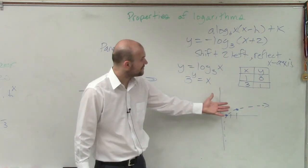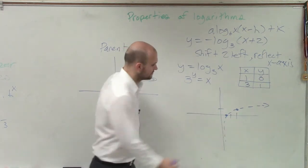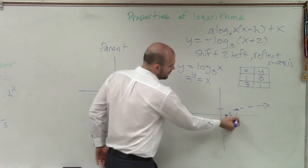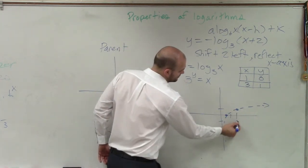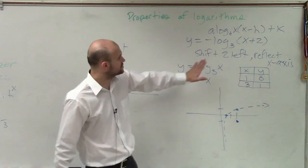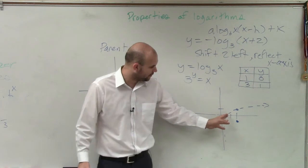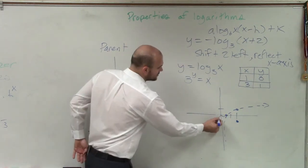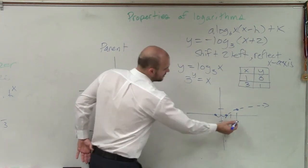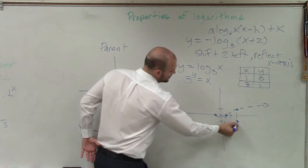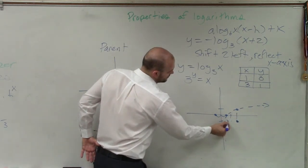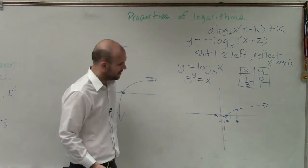However, I'm reflecting this graph over. So therefore, instead of this point going 3 up 1, I now go 3 down 1. And then I am now shifting this graph 2 units to the left. So instead of going over 1, now I'm going to go to the left 1. Instead of going over 1, 2, 3, I'm going to have this point right there.